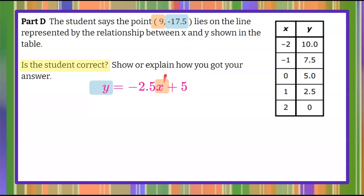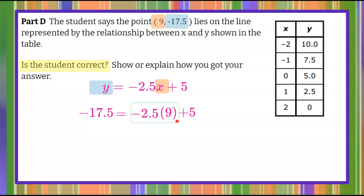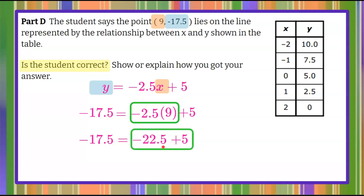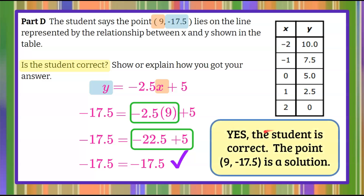This point needs to be a solution to the equation — it needs to make the equation true if it's on the line. So 9 goes in for x, and the y-coordinate, negative 17.5, goes in for y. Rewriting the equation: negative 17.5 equals negative 2.5 times 9 plus 5. We multiply negative 2.5 times 9 to get negative 22.5, then add 5. Negative 22.5 plus 5 equals negative 17.5. It checks! This is a true statement, so the student is correct — the point (9, negative 17.5) is a solution to this equation.